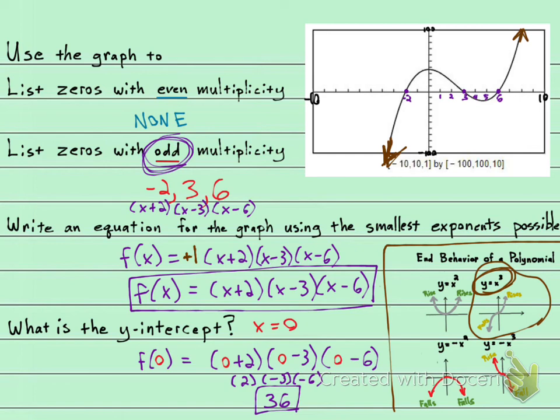Now let's make sure that this makes sense. We go back to our graph. And we want to see if the y-intercept is at 36. So we notice that our y-intercept is right here. 10, 20, 30, 40. It's in between 30 and 40. It's closer to the 40. So I will believe that this is 36.